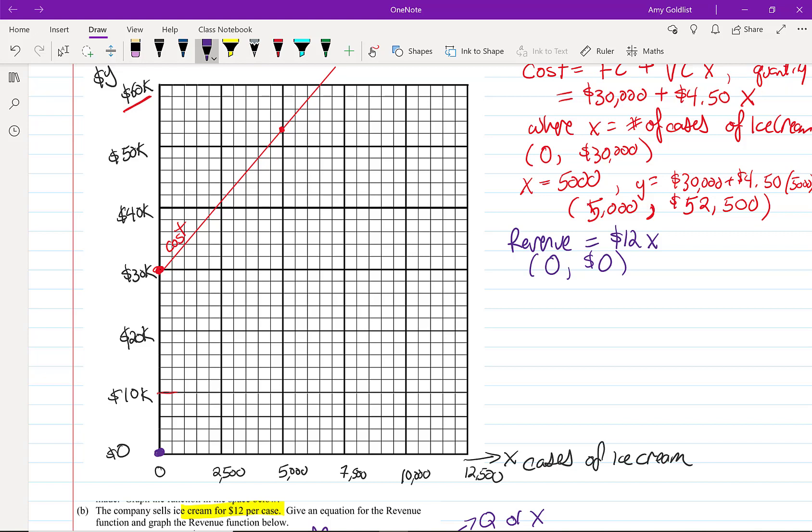Now, I'm gonna go with something that looks equally easy. If I sell 5,000 cases of ice cream, then I make 12 times 5 is $60,000 in sales. So, 5,000, 60, right at the top.